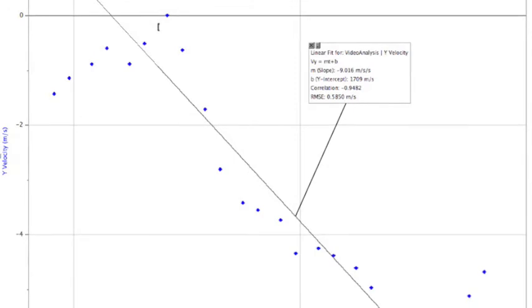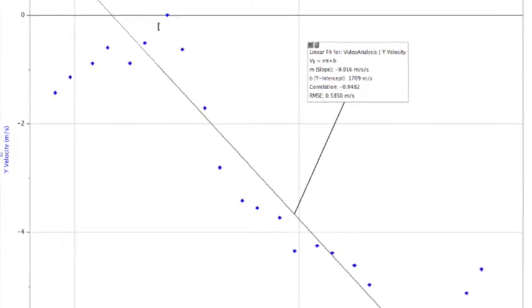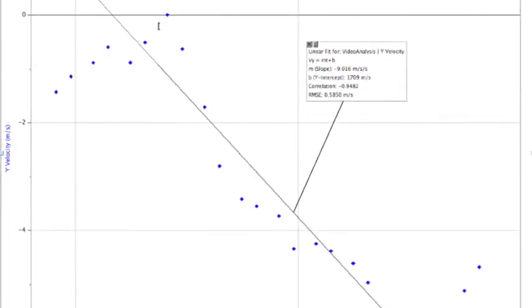In fact, if you look at the slope of the line, you can see that it's around minus 9 meters per second squared. That's very close to the free-fall acceleration that a person should have if they're falling.